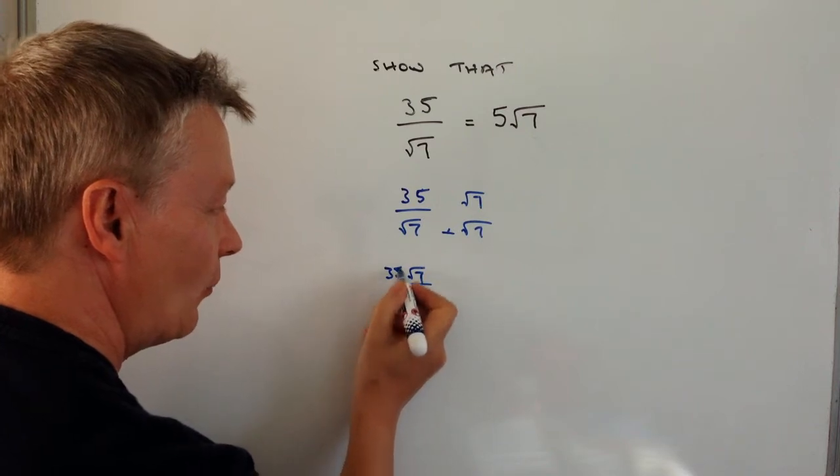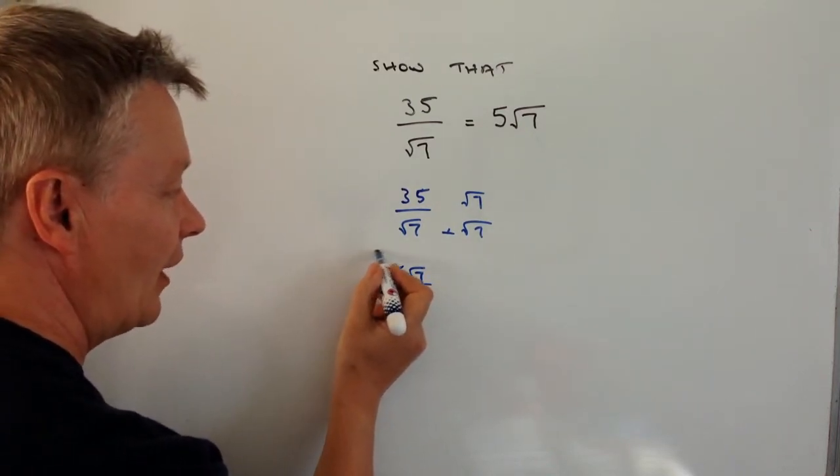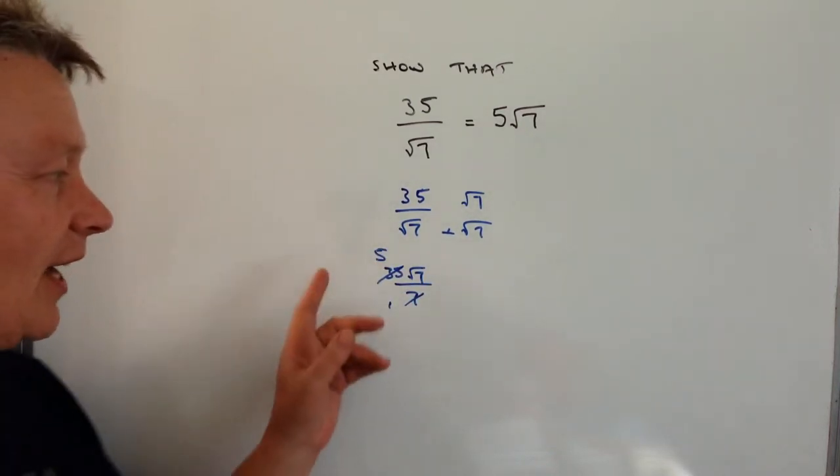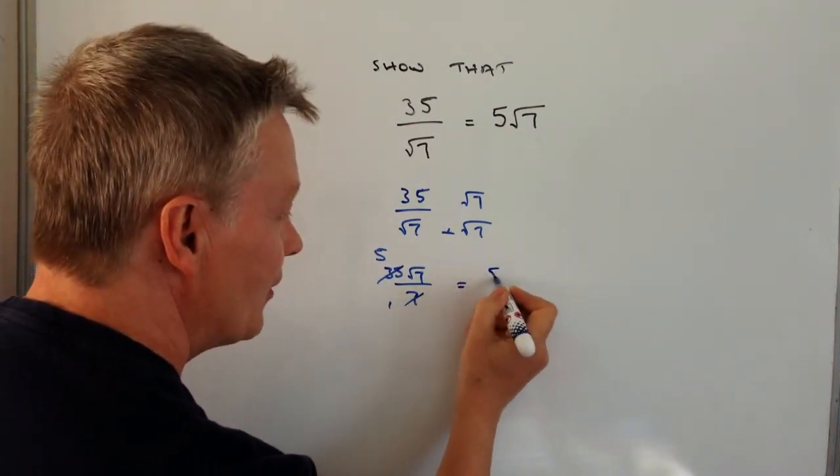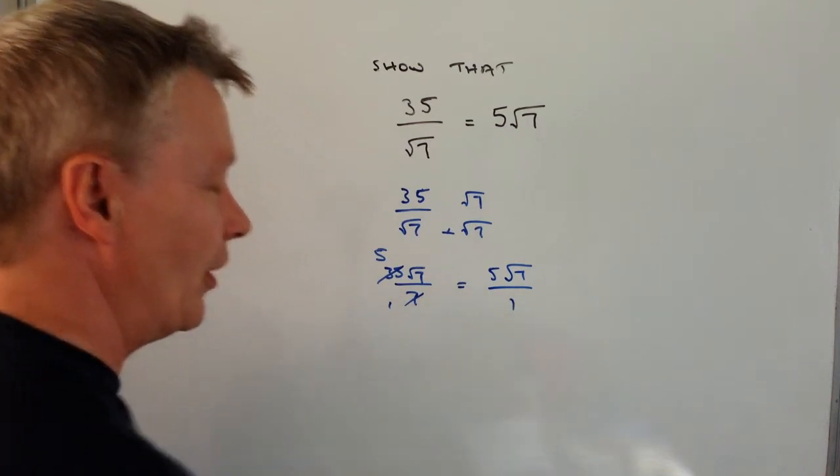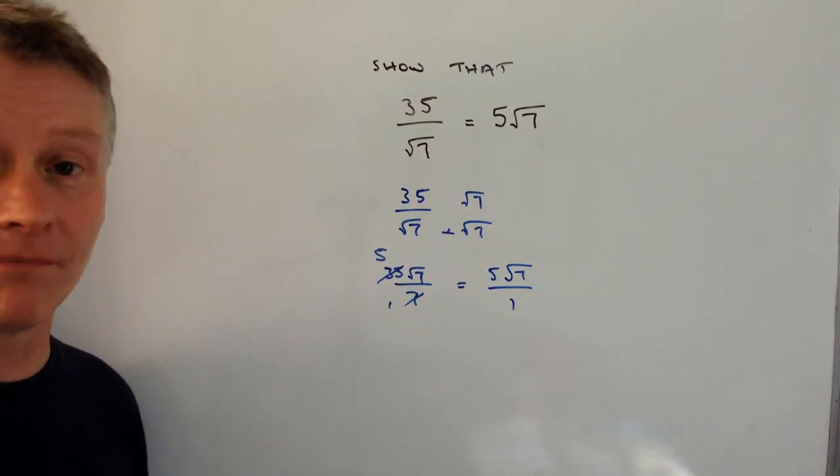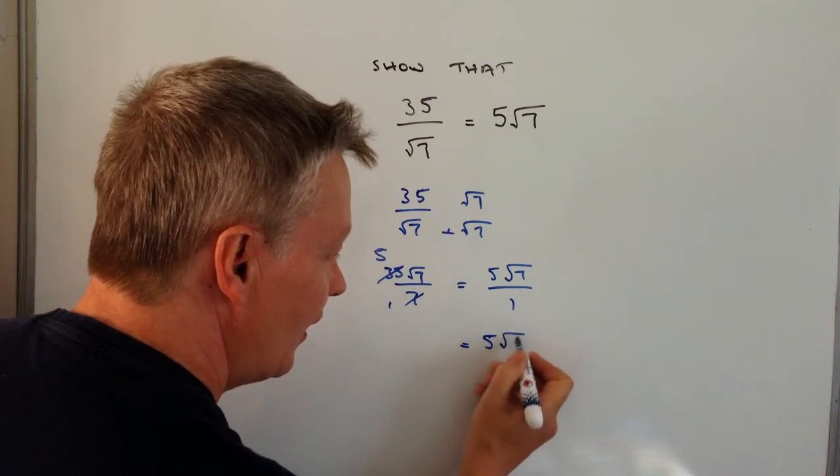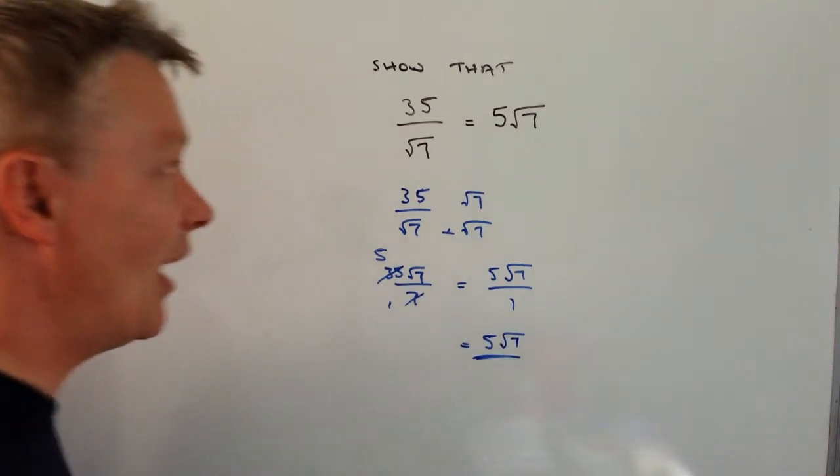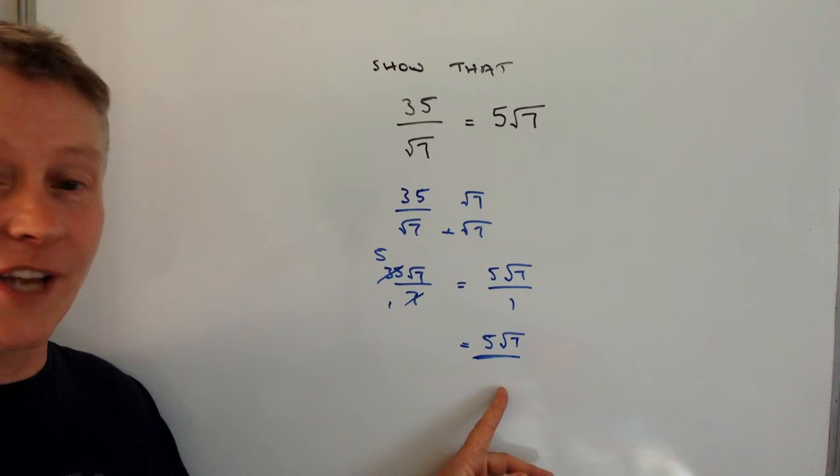So I'm going to divide this by 7, I get 1, divide that by 7, I get 5. So I end up with 5 root 7 at the top divided by 1 at the bottom. Well 5 over 1 is just 5 on its own, so therefore I can show that it's exactly the same as 5 root 7.